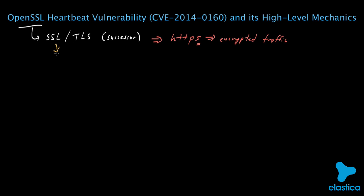In version 1.0.1, and also in some of the beta releases of version 1.0.2, there is a subtle but highly critical programming mistake that can lead to an attacker learning your confidential data. A system running these vulnerable versions of OpenSSL can be attacked quite easily. In this video, I'm going to describe both the attack and the flaw it exploits at a high level, and I'll also talk about some of its ramifications.